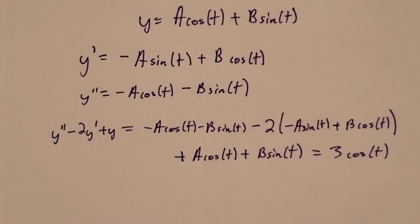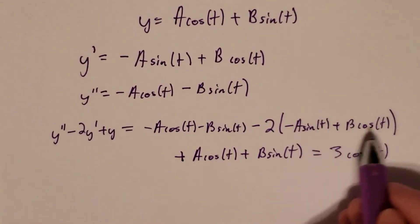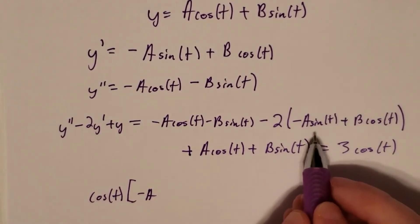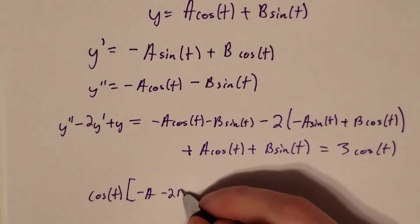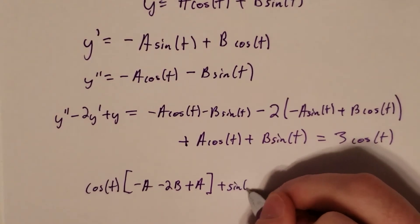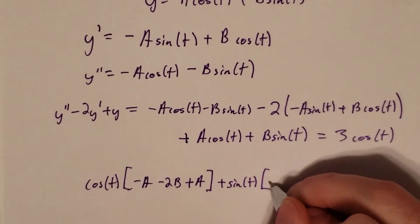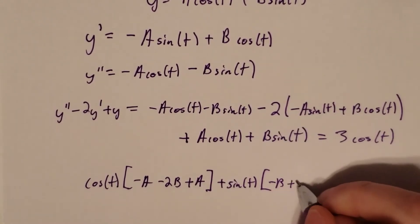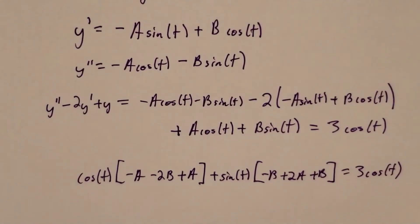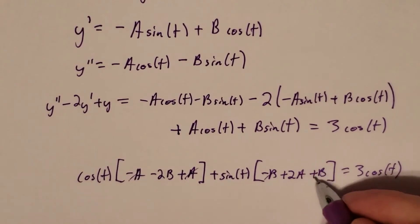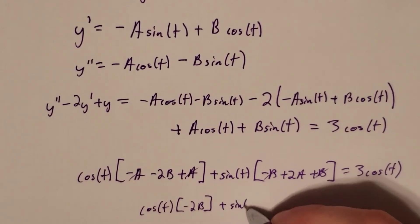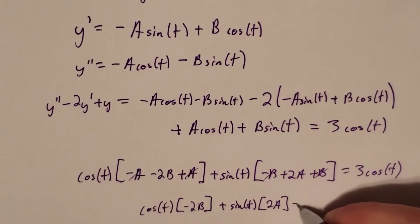Combining like terms on the left side, we get cosine of t times (negative a minus 2b plus a), plus sine of t times (negative b plus 2a plus b). The a's cancel in the cosine coefficient, giving cosine of t times negative 2b, plus sine of t times 2a, equal to 3 cosine of t.